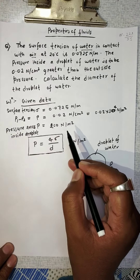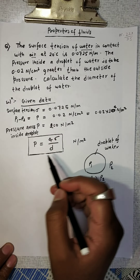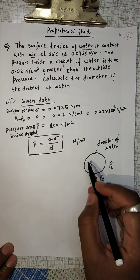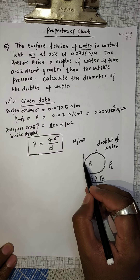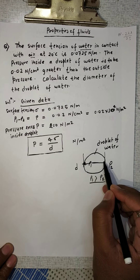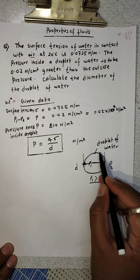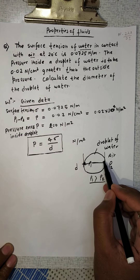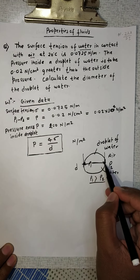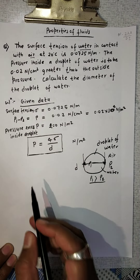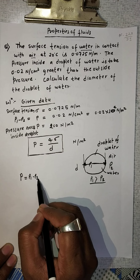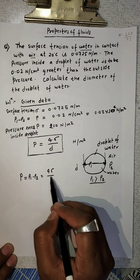We know that in the case of surface tension and droplets, the excess pressure P is equal to 4 sigma divided by D, where D is the droplet diameter. So this excess pressure P equals P1 minus P2 equals 4 sigma divided by D. Here, at the surface between air and water, the surface tension is sigma.